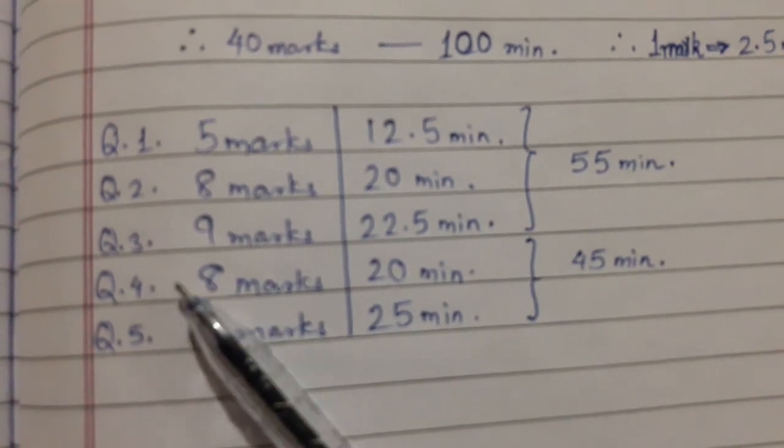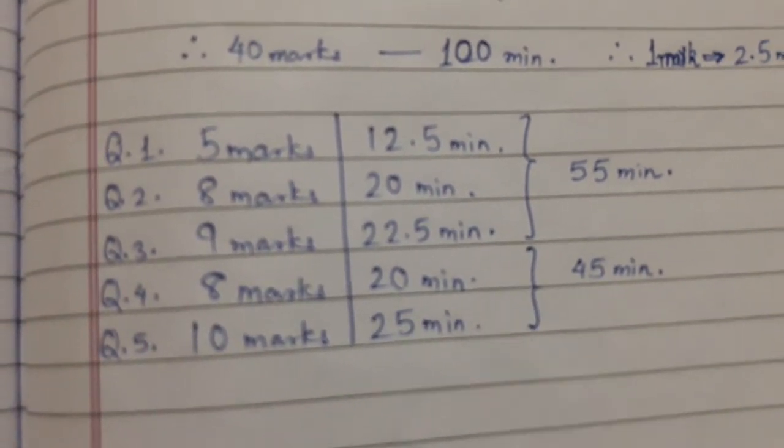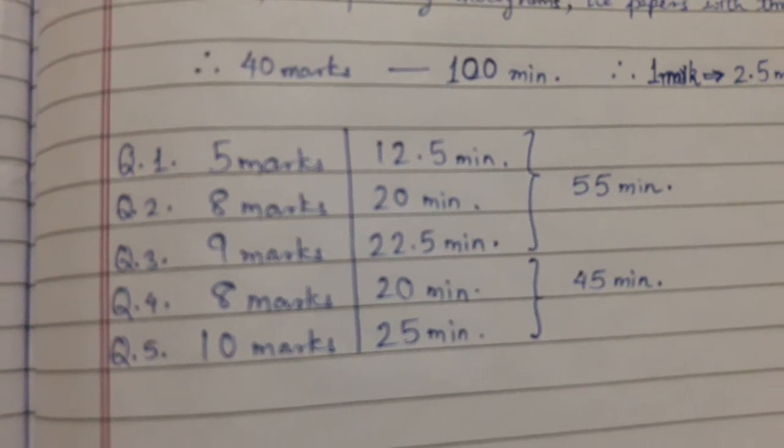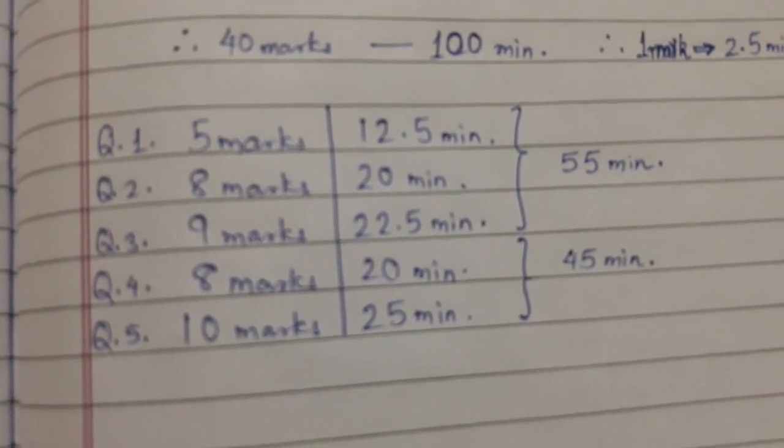For question number four and question number five, it should get completed in 45 minutes. That is the second half of the paper or the second hour of the paper.